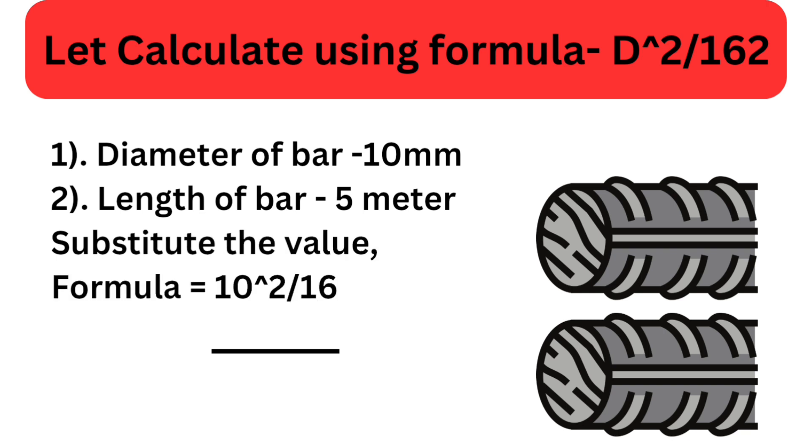Suppose we have a steel bar with a diameter of 10 millimeters and a length of 5 meters. Substitute the value in the formula and solve. We got weight of 10 millimeters diameter bar is 0.617 kilograms per meter.